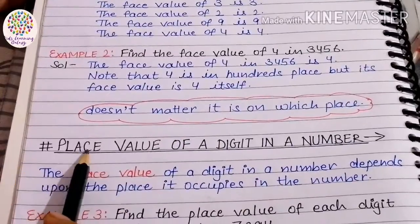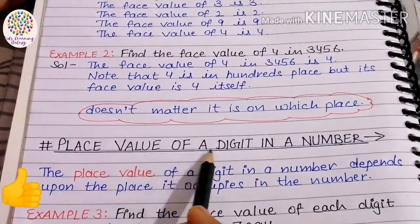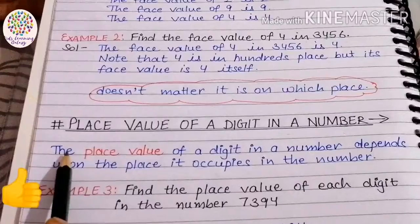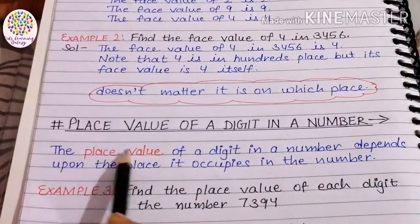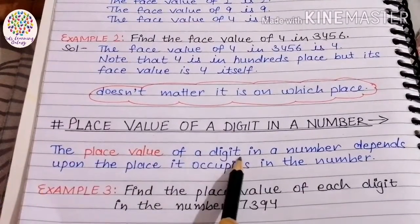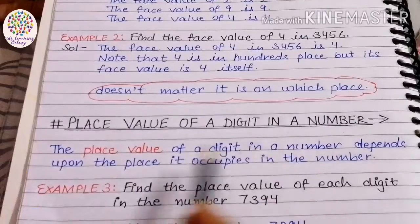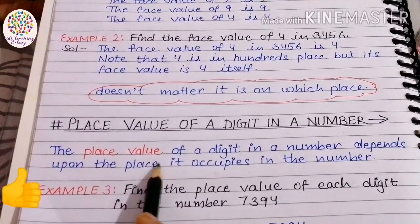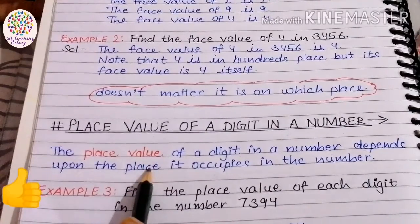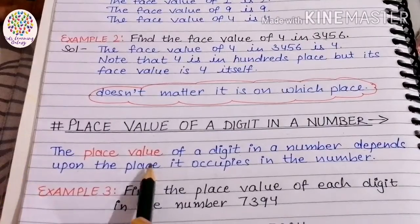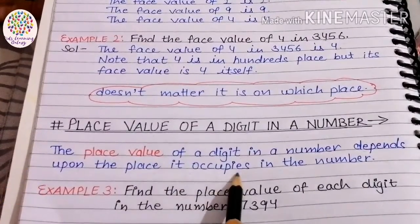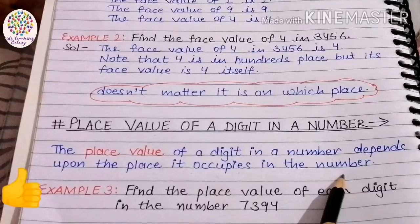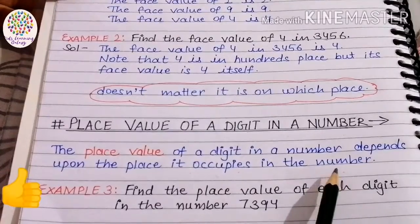Now let's move to the next topic: place value of a digit in a number. The place value of a digit in a number depends upon the place it occupies in the number. Let's understand with an example.